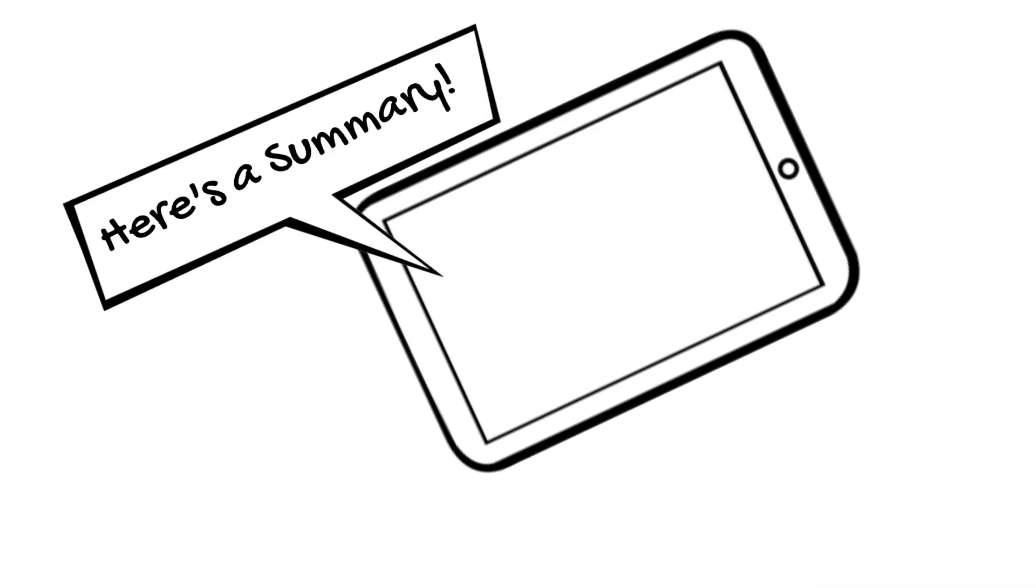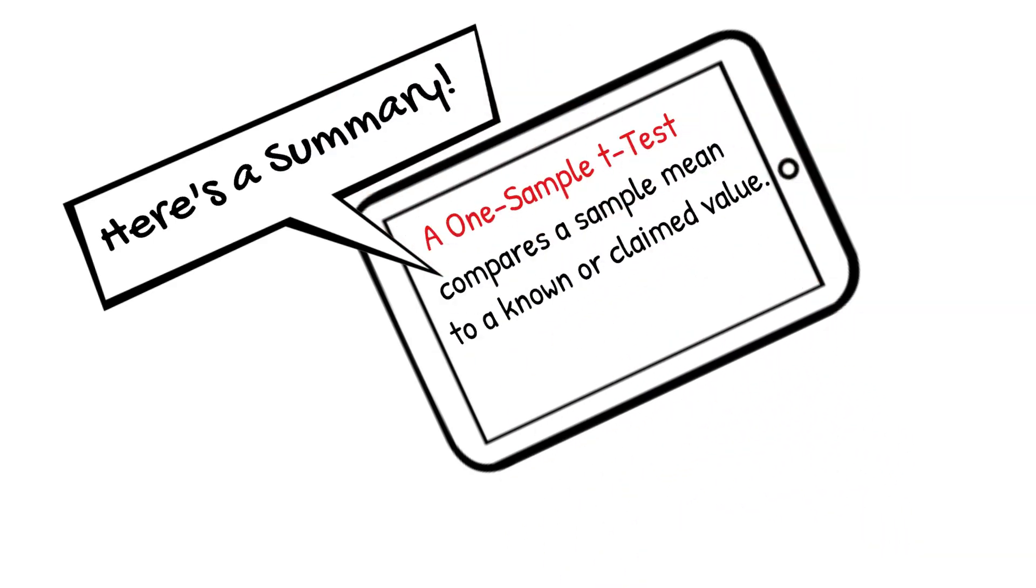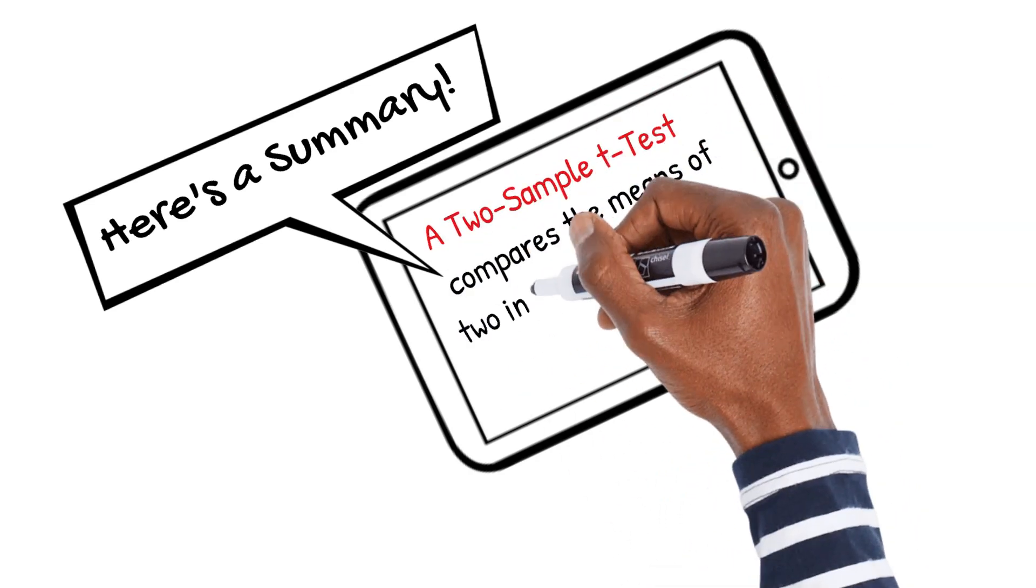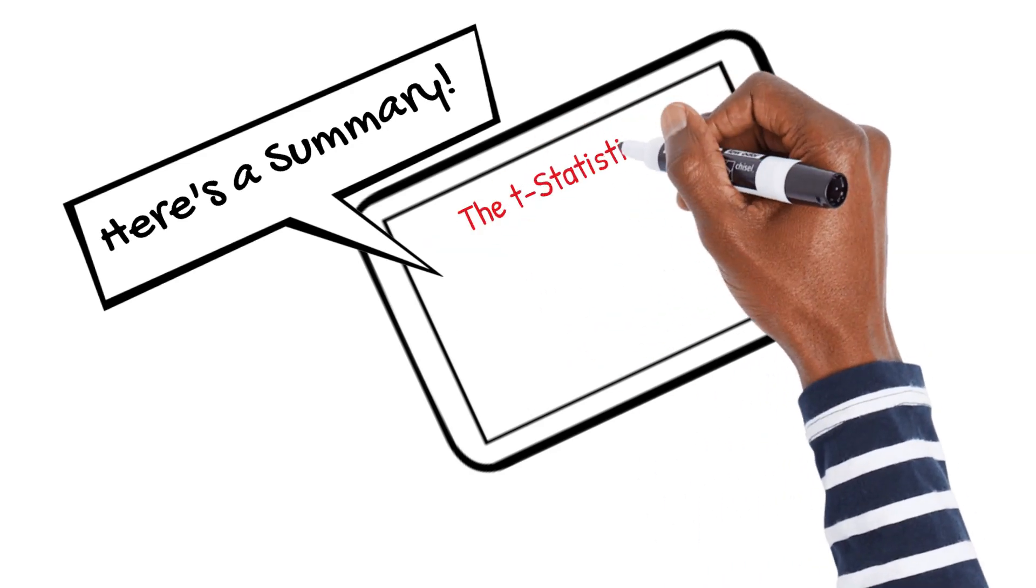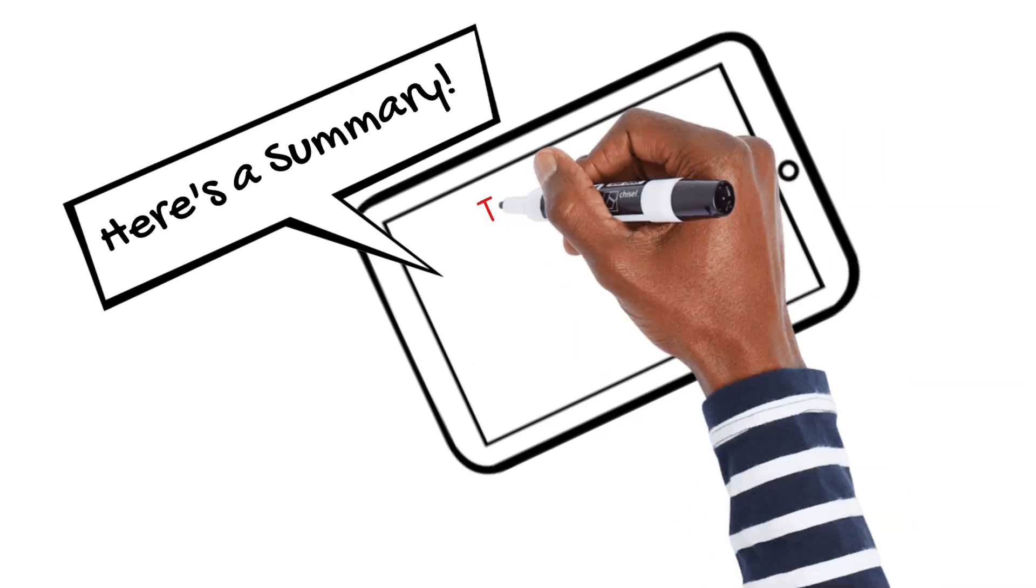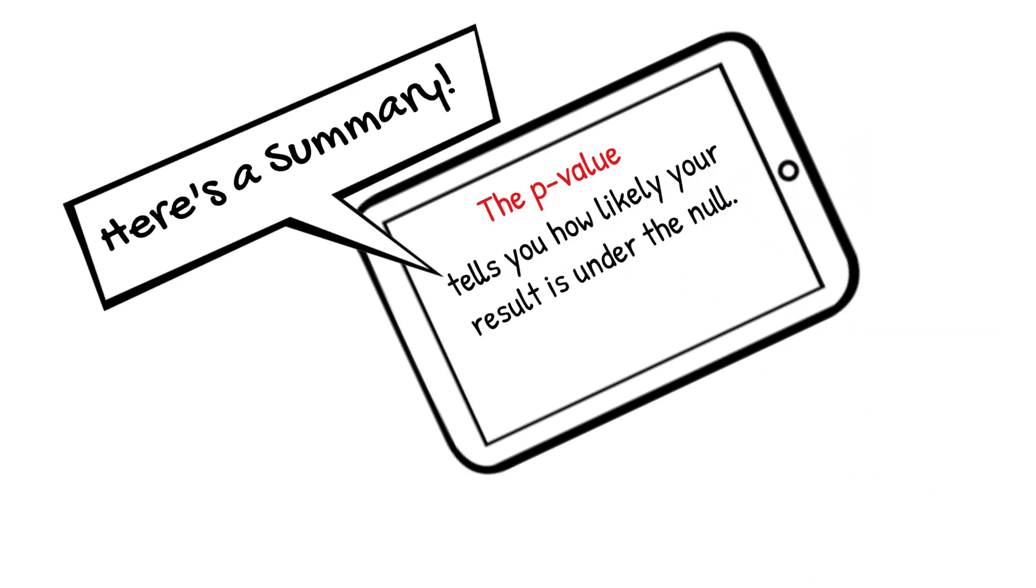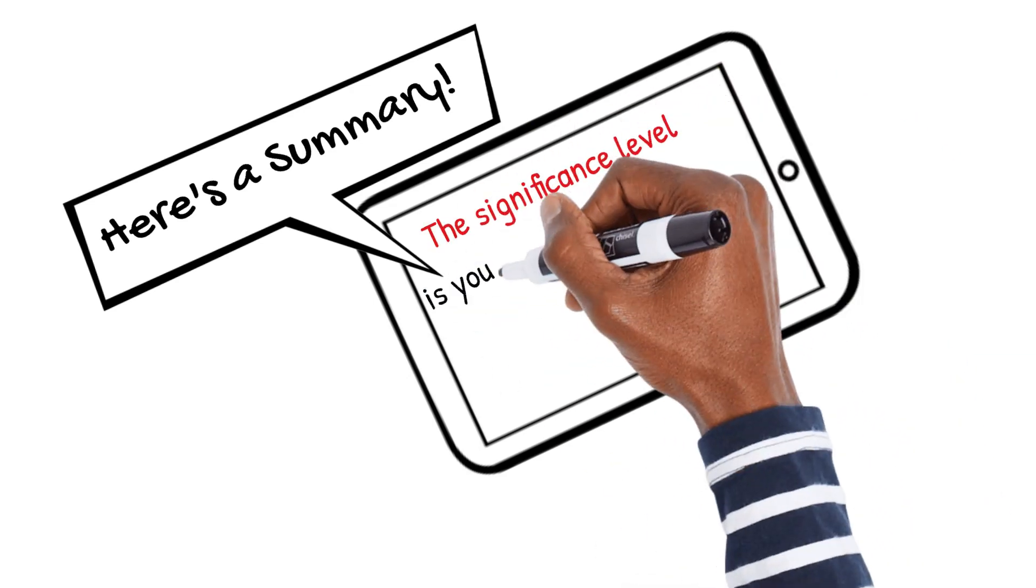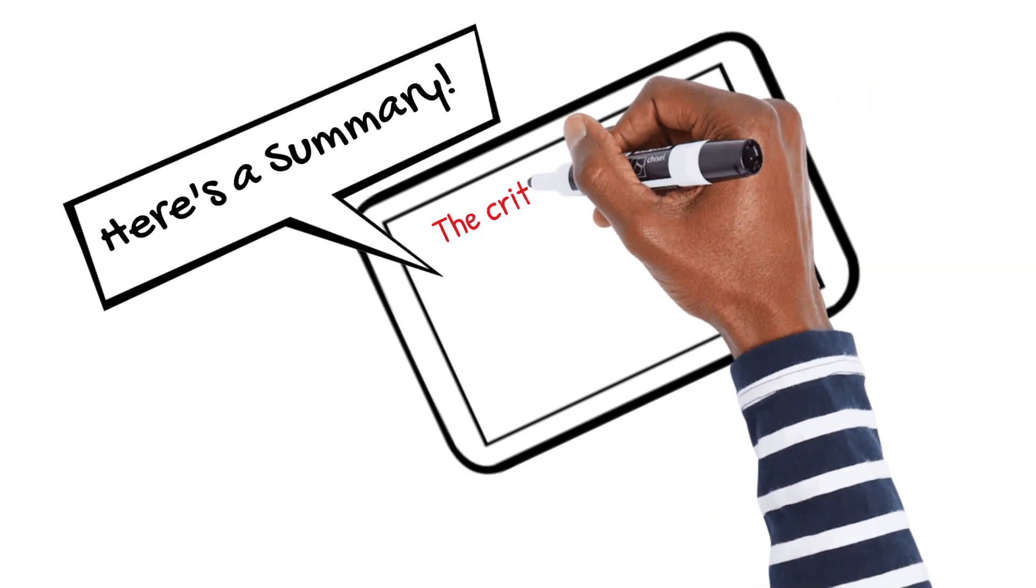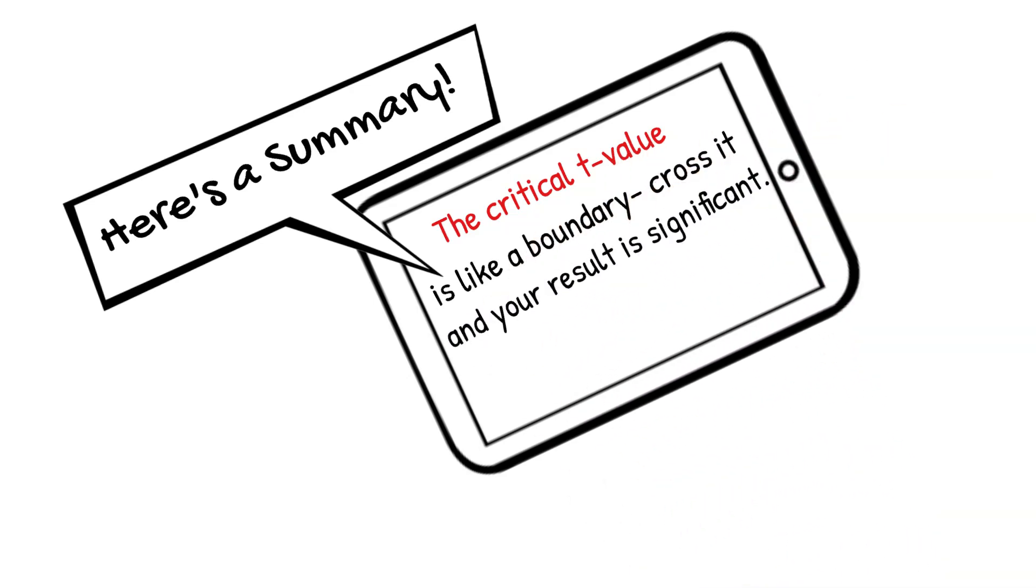Here's a summary of what we've learned. A one-sample t-test compares a sample mean to a known or claimed value. A two-sample t-test compares the means of two independent groups. The t-statistic measures how far your data is from what you'd expect under the null. The p-value tells you how likely your result is under the null. The significance level is your cutoff for deciding what is rare. And the critical t-value is like a boundary. Cross it and your result is significant.